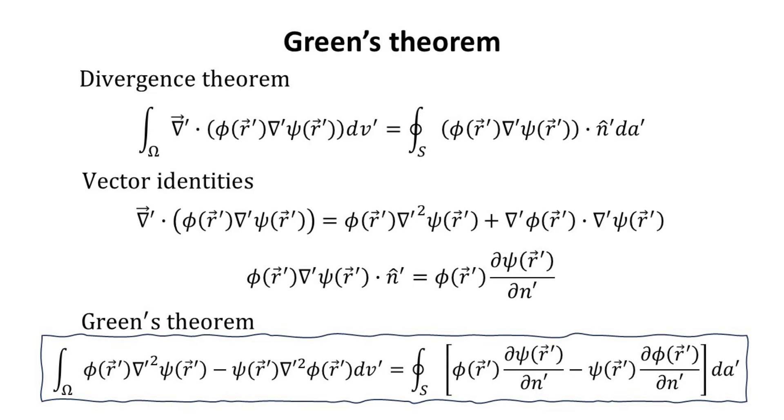In order to execute the next step, we need an identity from George Green known as the Green's Theorem. The derivation of Green's Theorem is quite straightforward, through the divergence theorem and two vector calculus identities as shown. Feel free to pause the video if you would like to inspect it yourself.